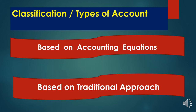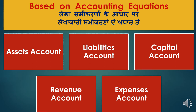First, we will discuss classification based on accounting equations. The accounting equation states that assets equal liabilities plus capital. Based on this, accounts are classified into five types: asset account, liability account, capital account, revenue account, and expenses account. We will discuss each one by one.